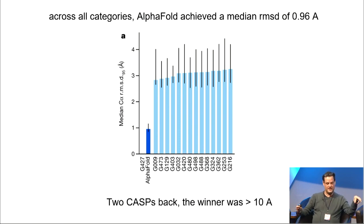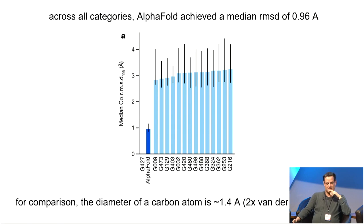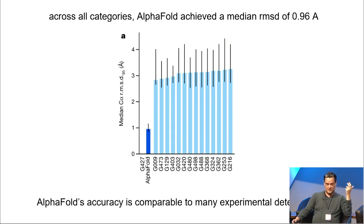So two casts back prior to that, the winner was actually more than 10 angstroms there, right? So you got volumetrically roughly more than a thousand-fold improvement. It's obviously a very large improvement in the accuracy. For comparison, the diameter of a carbon atom is about 1.4 angstroms, so it's sort of atomic precision. In fact, it's also comparable to many experimental determinations. It's possible to do better than an angstrom, but I gather talking to biologists, the sort of one to two angstroms is often fairly typical.